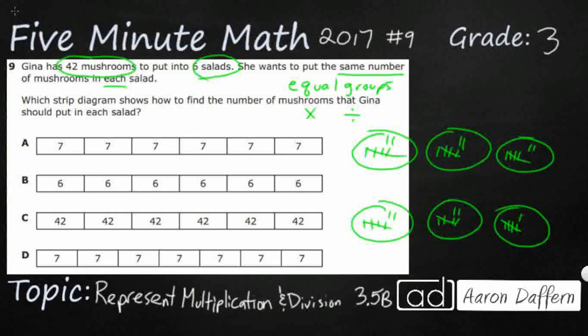And there we go — 41 and 42. So I've used all 42 of my mushrooms. I've put them into 6 salads, and I'll just put the digit 7 here. What I did was I took my 42 mushrooms, divided them equally into 6 salad bowls, and it ends up with 7 mushrooms in each.